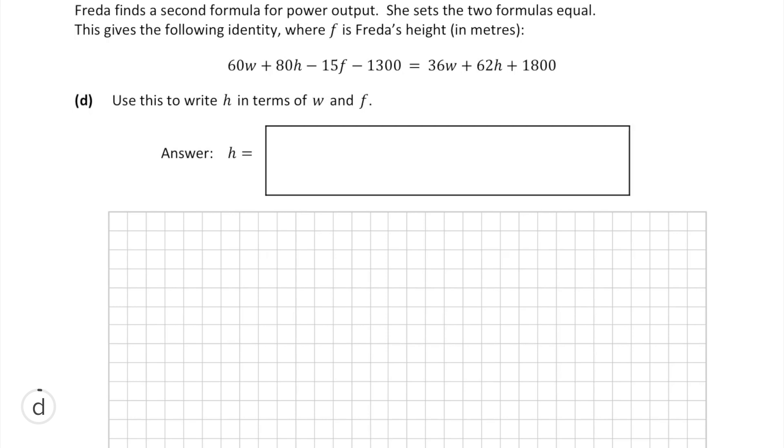In part d, we're told that Frida finds another formula for her power output. Now she lets these two formulas equal to each other and we're given another unknown f, where f is her height. The question asks us to write h in terms of w and f.